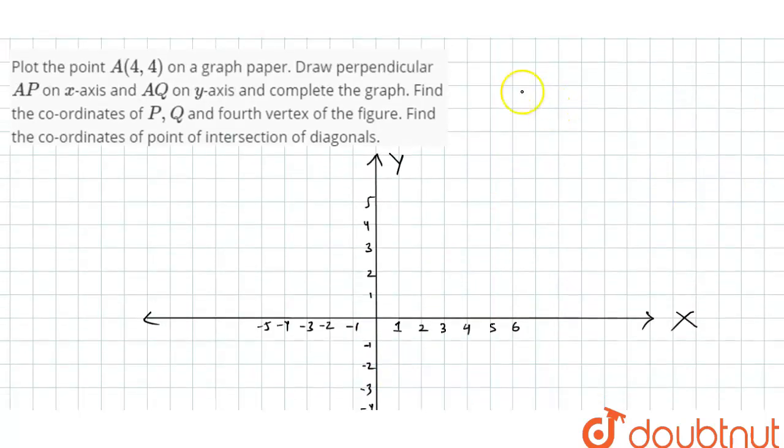So now the point A is, A point is (4,4). So first of all we'll locate the A point. We know the coordinate is in the form of X, Y. So X coordinate is 4 and Y is 4. So we'll find out X is 4, Y is 4. So this is point A, that is (4,4).